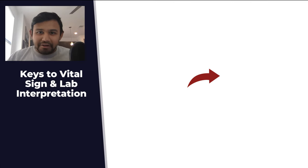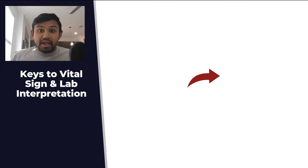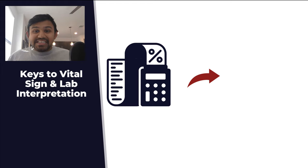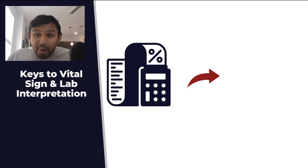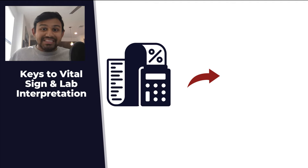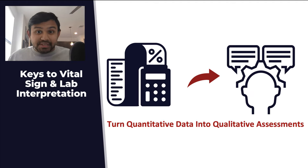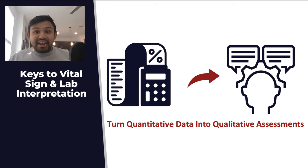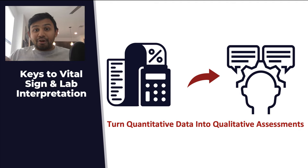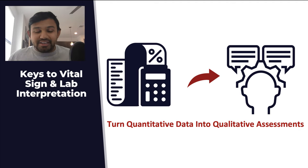When we're talking about vital signs in test questions, what you really have to keep in mind is that a vital sign is a number — a piece of quantitative data. As you're going through your USMLE questions, especially for vital signs and labs, you have to turn that quantitative data into qualitative assessments. For example, when we're looking at that last question, it stated a temperature of 39 degrees centigrade. Rather than fixing that as 39 degrees, I would encourage you to say the patient is febrile.